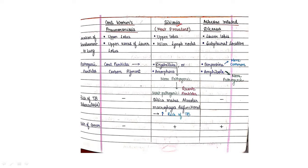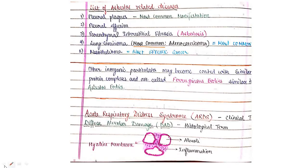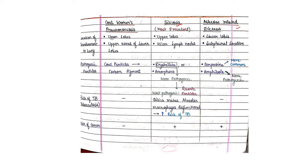Now let's discuss the three main types: coal workers' pneumoconiosis, silicosis, and asbestos-related disease. Starting with location: coal workers' pneumoconiosis mainly involves the upper lobe. Silicosis — the most prevalent pneumoconiosis — also mainly involves the upper lobe. Asbestos-related disease mainly involves the lower lobes, though upper zones of lower lobes are also involved. Hilar lymph nodes are also involved, and asbestos-related disease has a subpleural location.